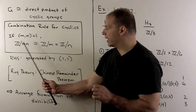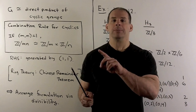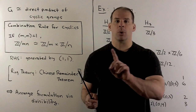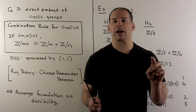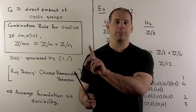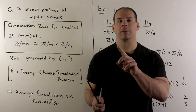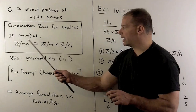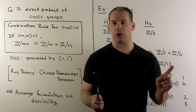With this, for our finite abelian group G, we're able to decompose it into its Sylow p-subgroups as a direct product. Then those Sylow p-subgroups can be written as products of finite cyclic groups whose orders are powers of p. Using this, we can combine the powers of p to get our divisibility result.